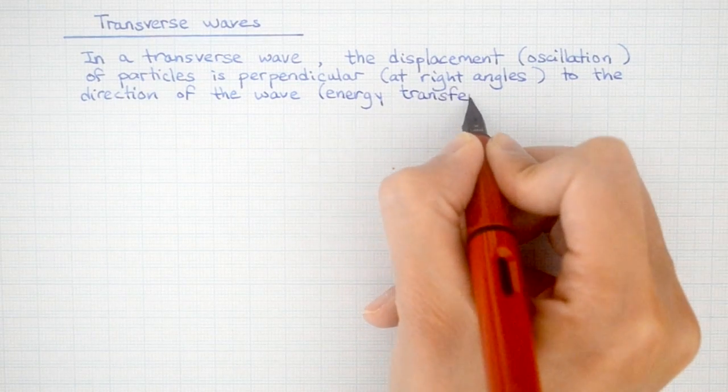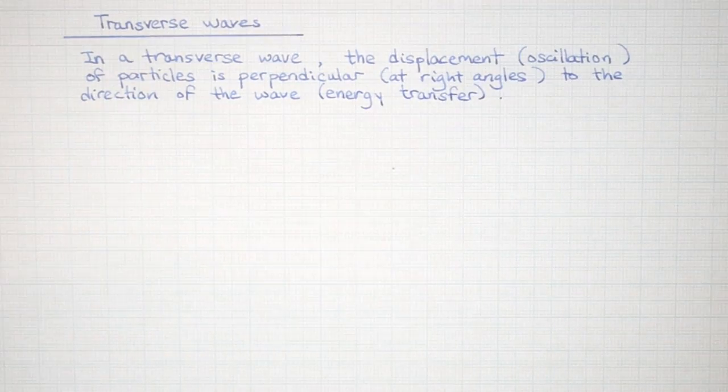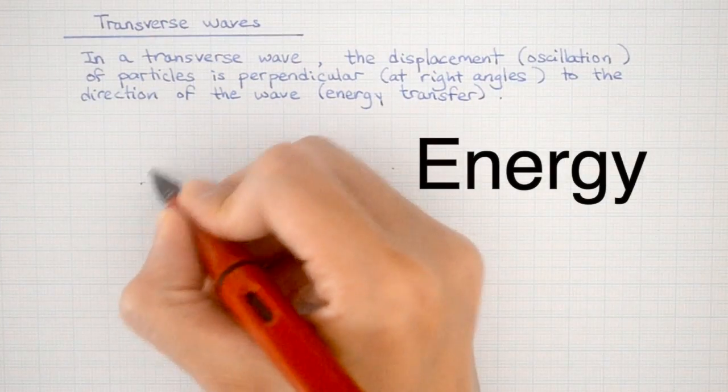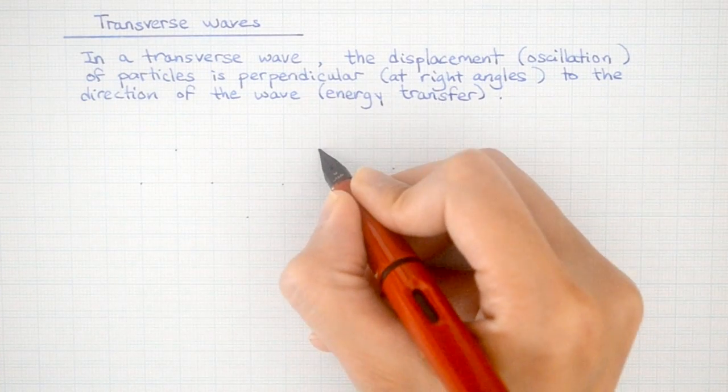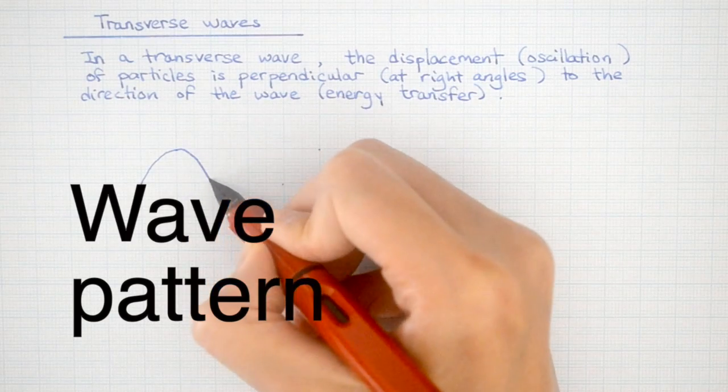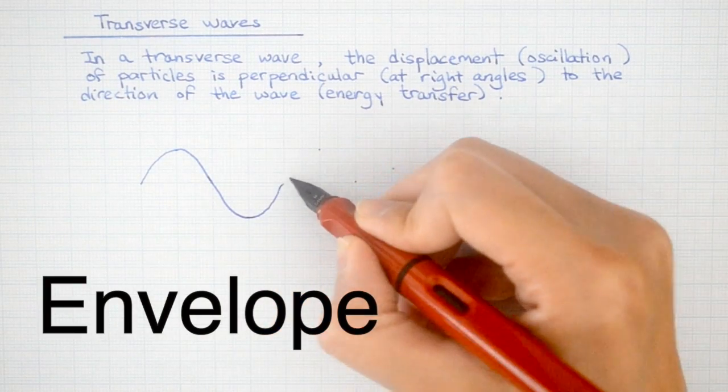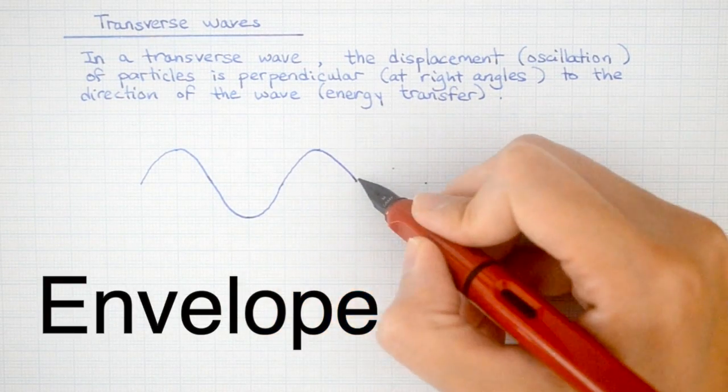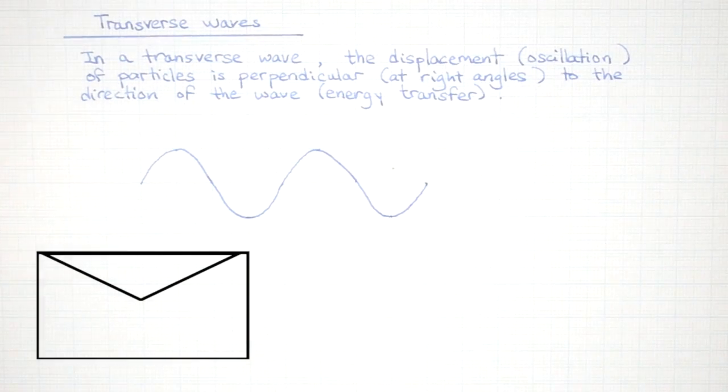We know that by definition a wave has the ability to transfer energy without transporting matter. It's the pattern of the wave that carries this energy. Another name for a wave pattern is envelope. I imagine an envelope wrapping around the particles just like a wave pattern does.